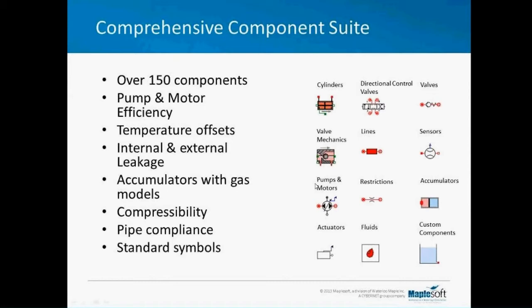The library itself has over 150 components for hydraulics modeling, with the ability to extend it further. There are hydraulic cylinders, directional control valves, ideal and non-ideal pumps and motors with efficiency losses, gas and spring-loaded accumulators, pipes, restrictions, and much more. These components let you model higher-order effects like internal and external leakage, compressibility, and valve dynamics. The components are physically realistic across all flow conditions. Hydraulic components can have temperature offsets, so different parts of your hydraulic circuit can have different working temperatures — which modifies the transport properties of the hydraulic oil and hence the system dynamics.